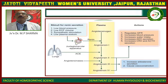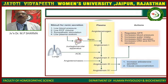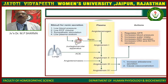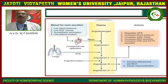See the flow chart to understand how renin converts angiotensinogen into angiotensin-1 in the plasma, which is then acted upon by ACE in the lungs to produce angiotensin-2.